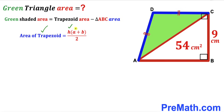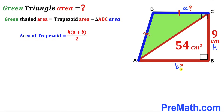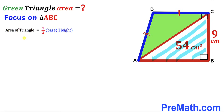The area of a trapezoid equals height H times the sum of bases A and B, all over 2. Here the height of the trapezoid is 9, but bases A and B are unknown. Focusing on right triangle ABC and using the triangle area formula — area equals half times base times height — the base is AB, height is 9, and area is 54.